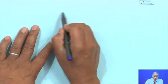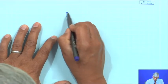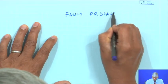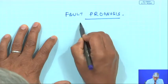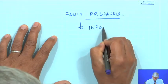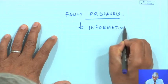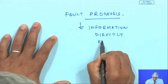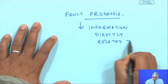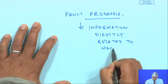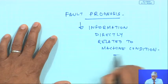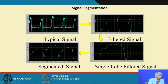This is something we have to use judiciously when doing models for fault prognosis. Keep in mind: carry information which is directly related to machine condition. There is no point taking the lull period signal and trying to find out what is wrong with the machine.